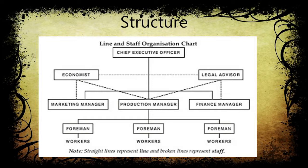The legal advisory department gives advice and services to marketing, production, and finance. So the hierarchy goes: chief executive officer, marketing manager, production manager, finance manager, foreman, and worker. This is the line organization, shown as a straight line. And the broken lines are the staff organizations, which provide advice to the line functionaries.